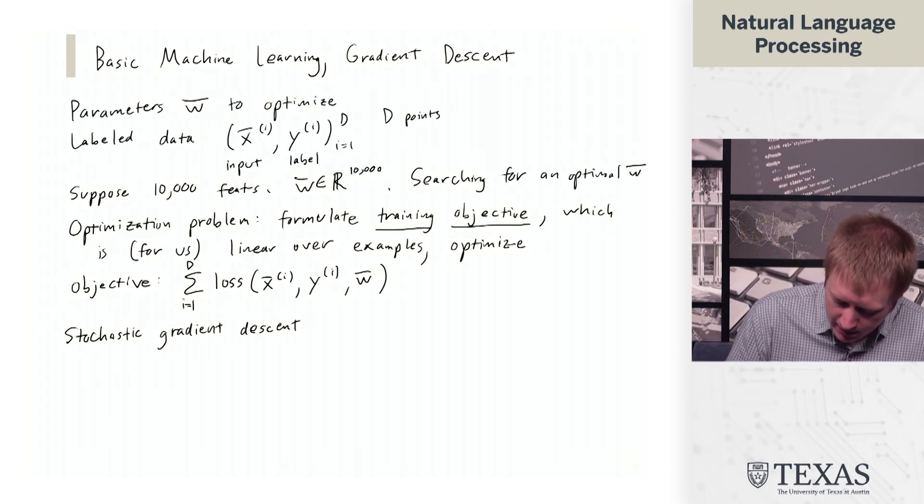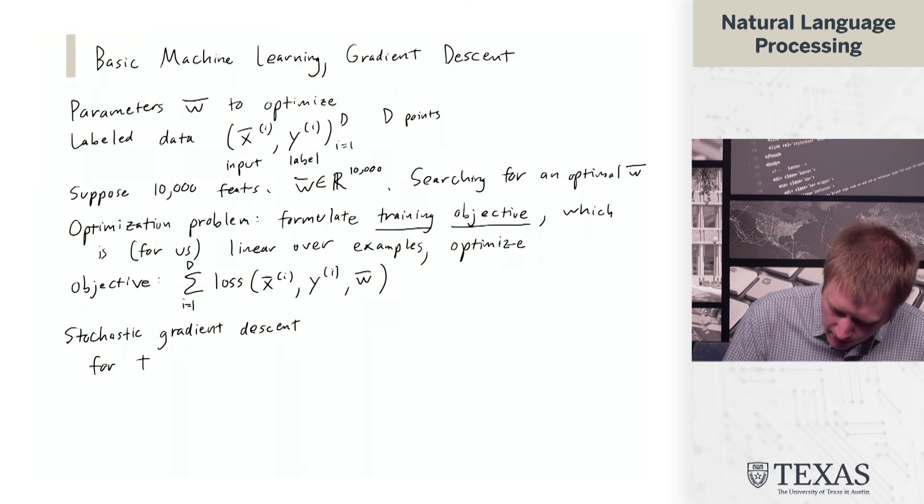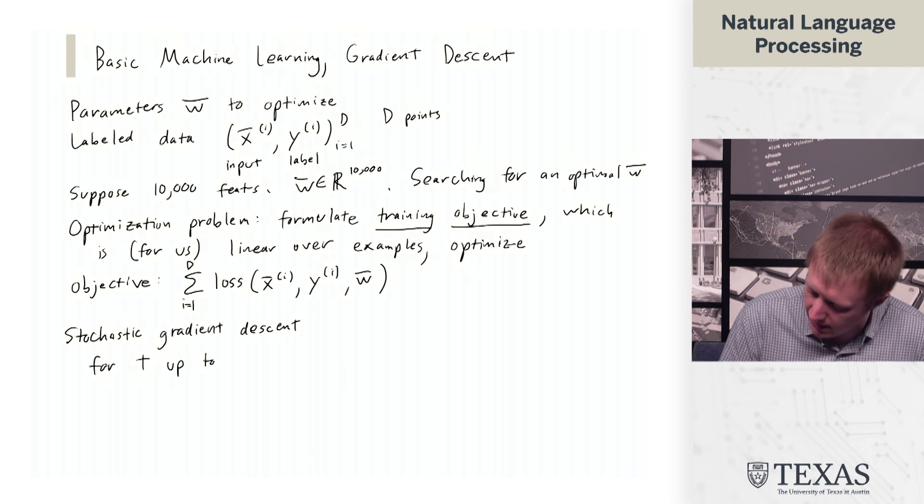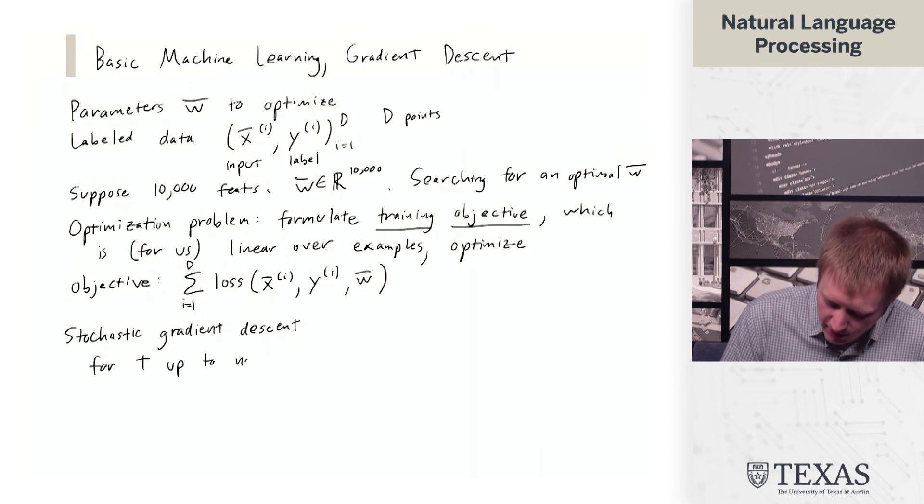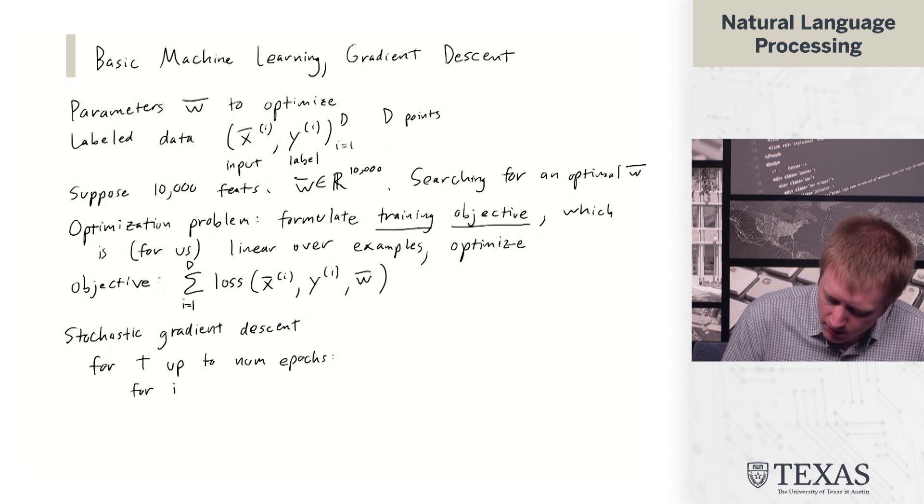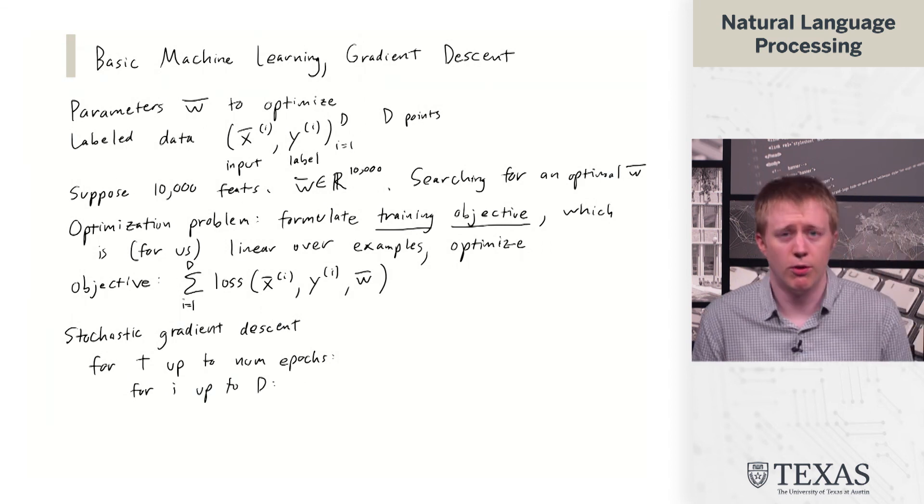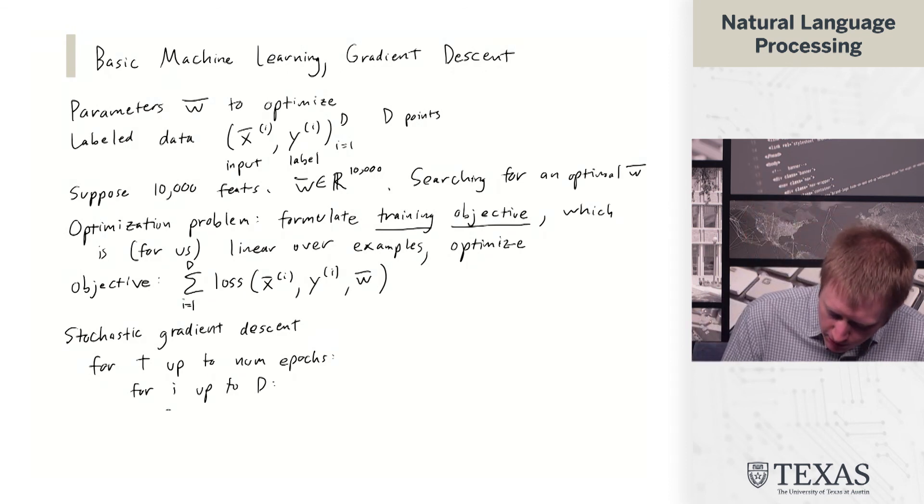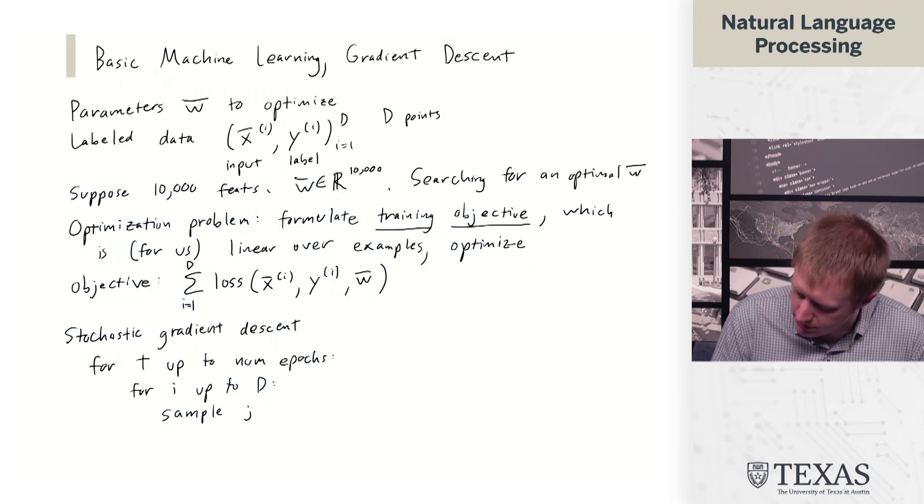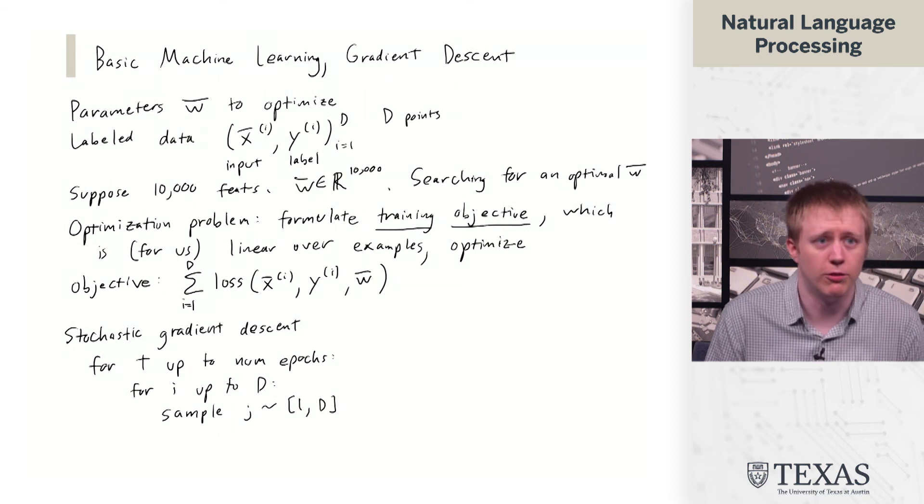So basically, what this looks like is the following. So for a variable t up to the interval 1 to d, what we do is we sample j from the interval 1 to d.